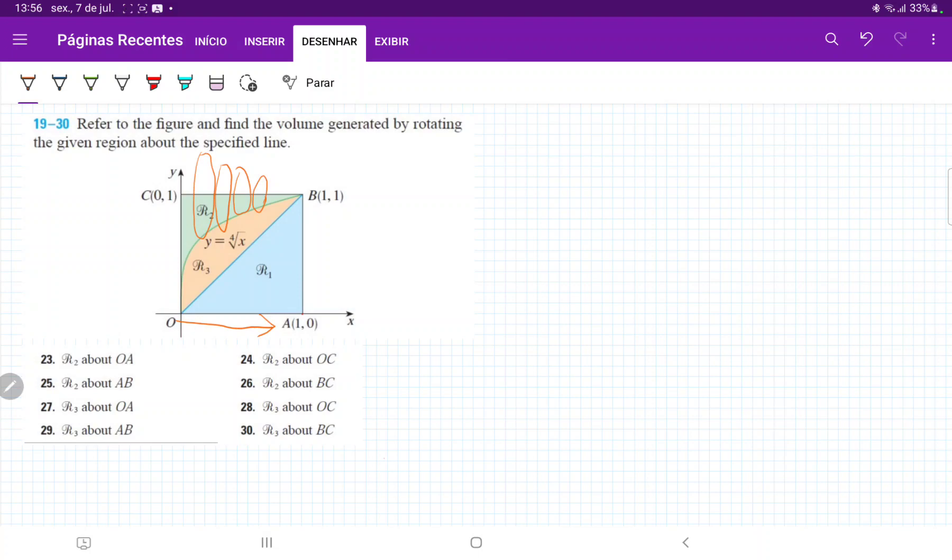So we are integrating with respect to x, and we're going from x equals 0 all the way to x equals 1. That's where our circles are going to end, so we're integrating from 0 to 1 with respect to x.